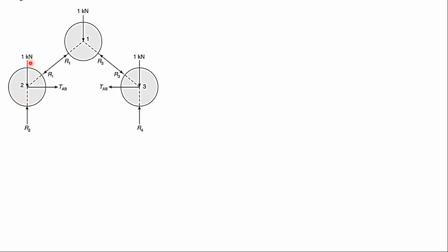For sphere two, there are four forces and three unknowns, so we cannot solve it first using only two equations of equilibrium. Similarly, sphere three has four forces with three unknowns. However, for sphere one, there are only three forces acting — self weight, R1, and R3 — with only two unknowns, R1 and R3. So we will solve sphere one first.